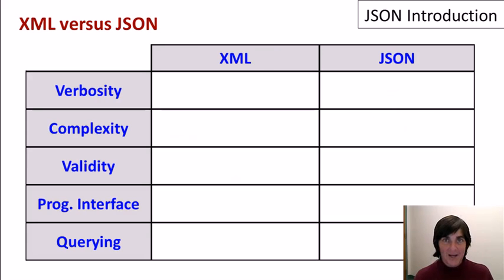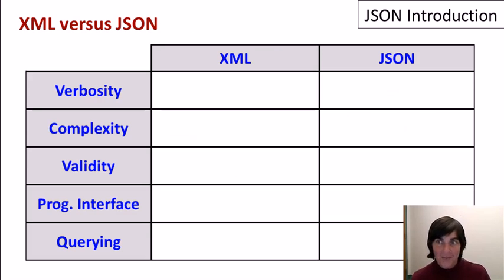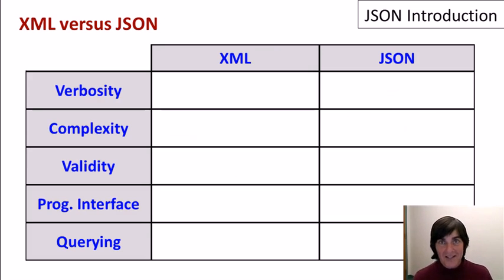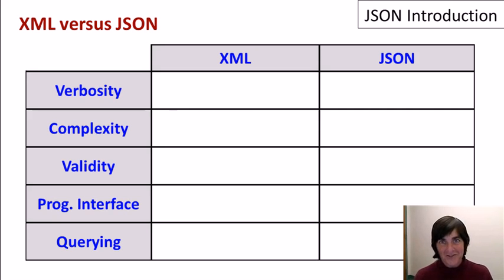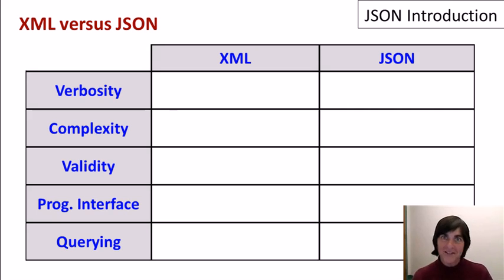Now let's compare JSON and XML. This is actually a hotly debated comparison right now. There is significant overlap in the uses of JSON and XML. Both of them are very good for putting semi-structured data into a file format and using it for data interchange. And so because there's so much overlap in what they're used for, it's not surprising that there's significant debate.